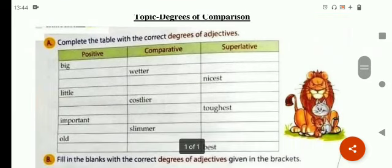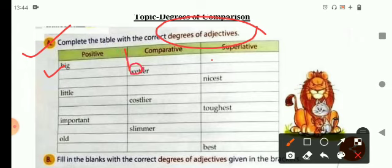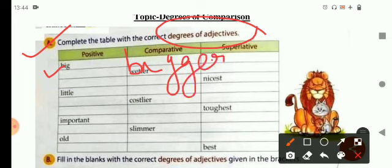your first question is complete the table with correct degrees of adjectives. You have already read the degrees of comparison in your class. So here in this exercise, in your first column, the positive degree is given to you and you have to write the comparative degree for word big and superlative degree. Now, comparative degree for big will be bigger and superlative degree will be biggest.